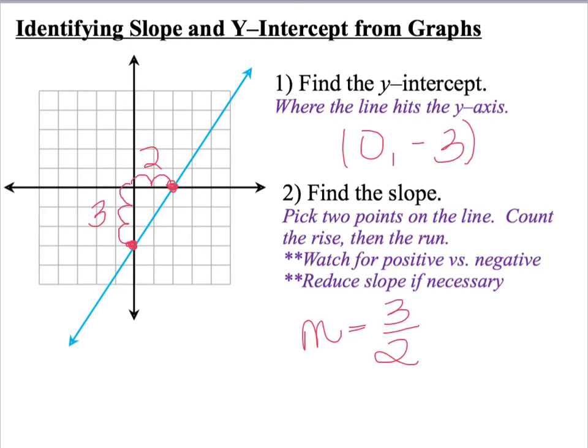So watch out if you have a positive or negative slope. Since we know what positive and negative slope look like, then you just need to add the negative if necessary. And then also, depending on which points you pick, you may be able to reduce your fractions. So always reduce your slope fractions if necessary.